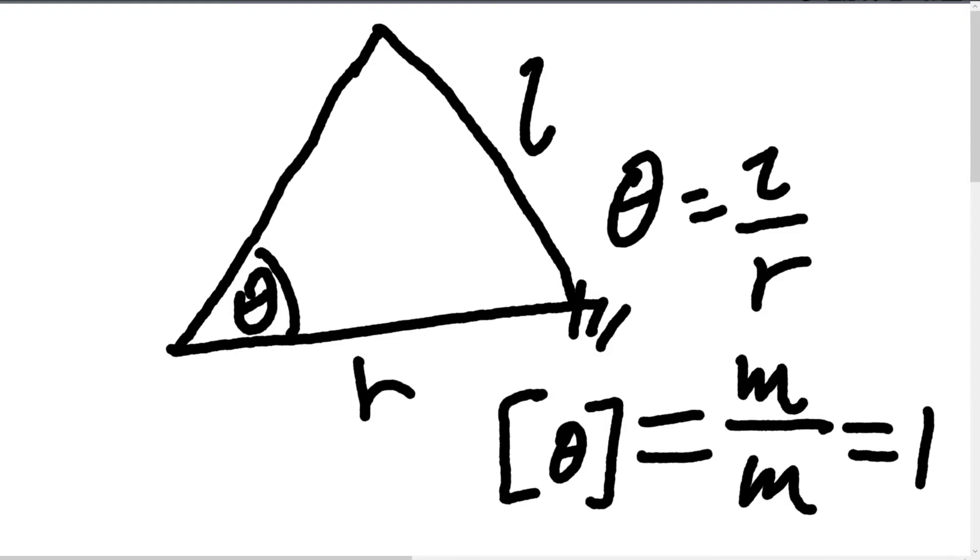The radian term does not appear because the number of radians an angle is defined as the ratio of that arc length, L, to the radius of the center itself, R.